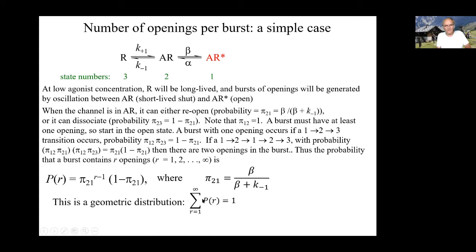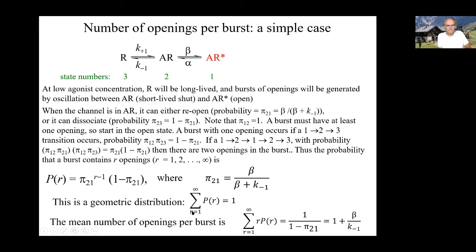The sum of those probabilities from 1 to infinity is 1. The mean number of openings per burst is given by the standard formula for the mean of a discrete distribution — sum of r times p(r) — and that comes out to be 1 over 1 minus pi-2-1, which is 1 plus beta over k-minus-1. The mean number of shuttings per burst is beta over k-minus-1, one less than the number of openings per burst. The bigger beta is compared with k-minus-1, the more times the channel will reopen on average.